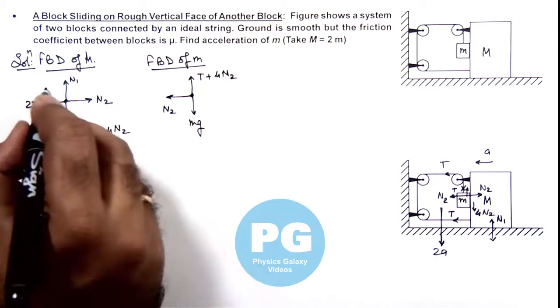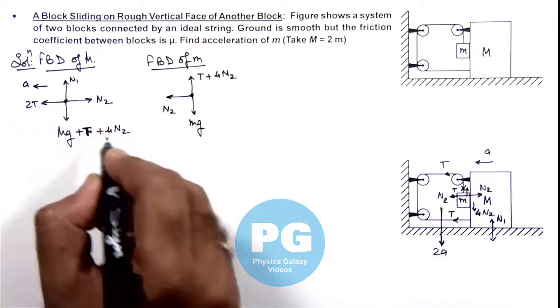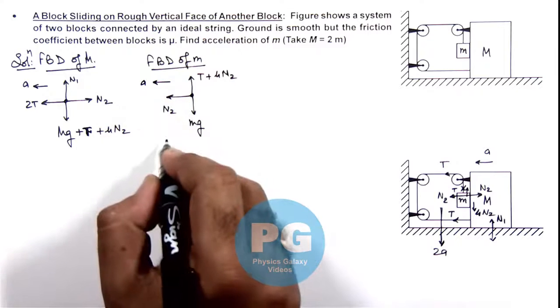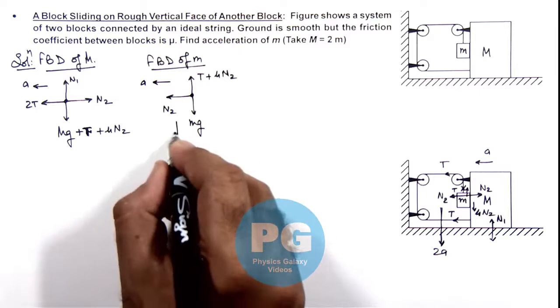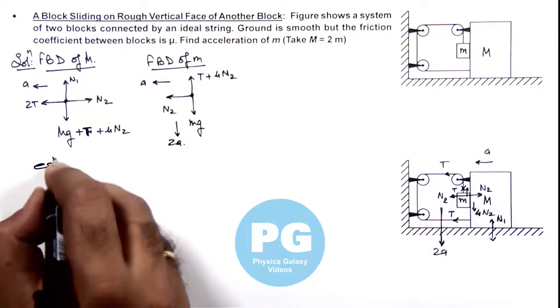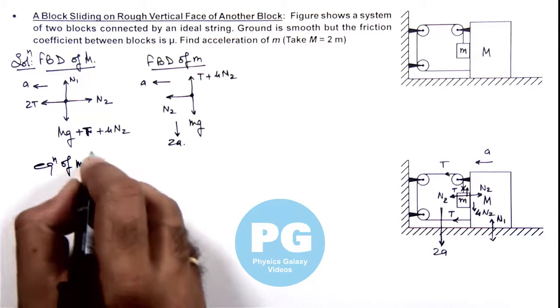And as block is moving toward left with acceleration ay, and small m is also moving with acceleration ay, and it is also going down with acceleration 2ay. Now we can write the equations of motion for these blocks.